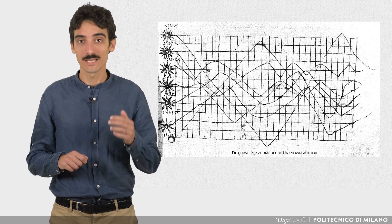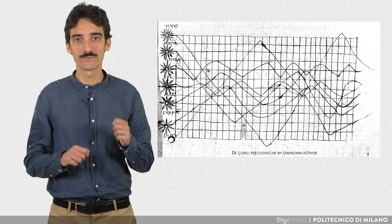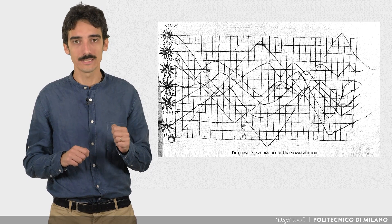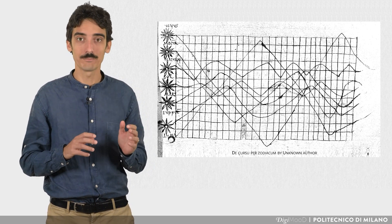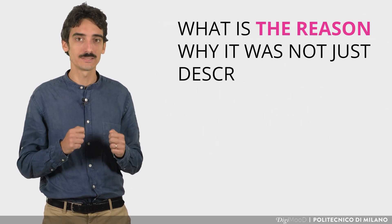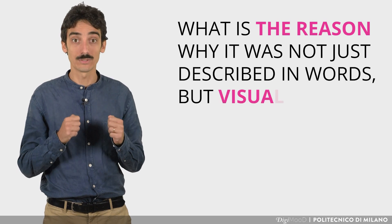The visualization of data is not something new. It's from centuries ago, the first known visualization on a coordinate system representing planetary movements. But what is the reason why it was not just described in words but visualized?